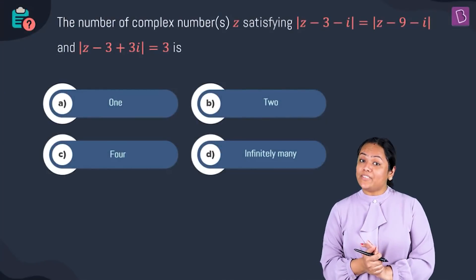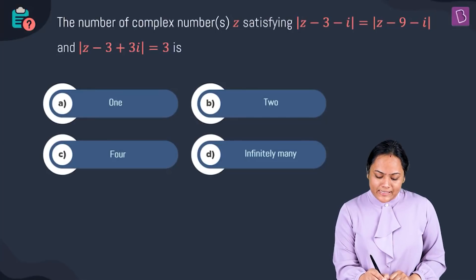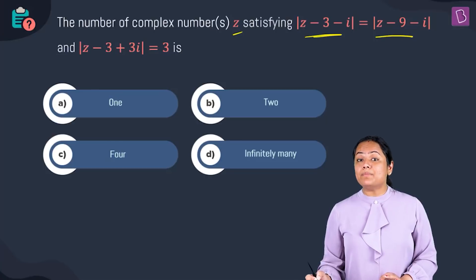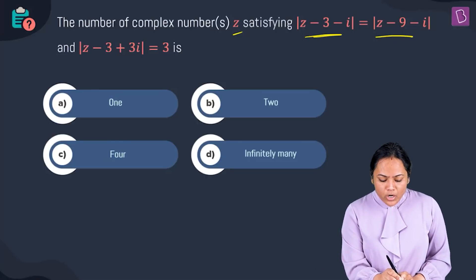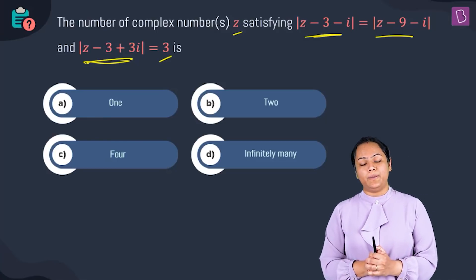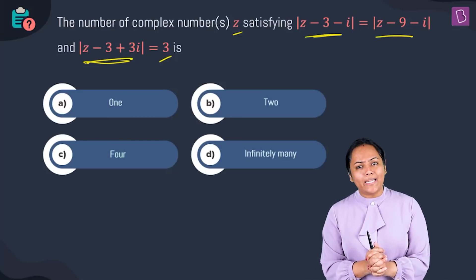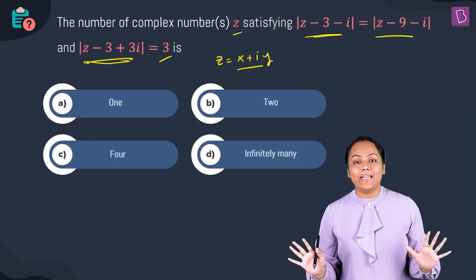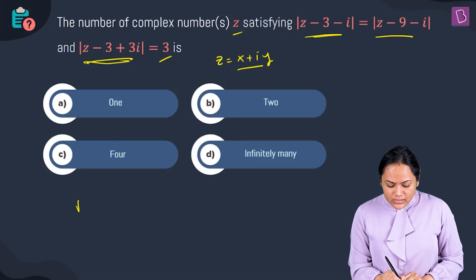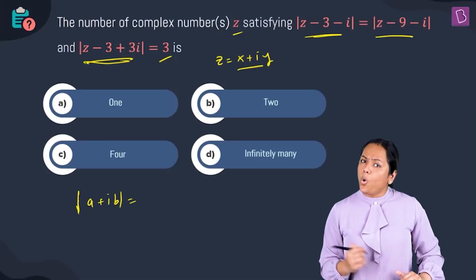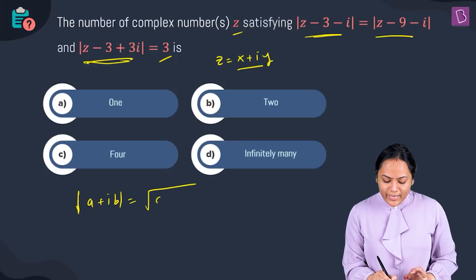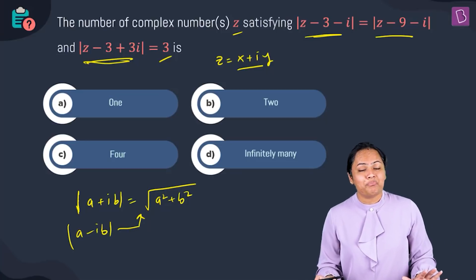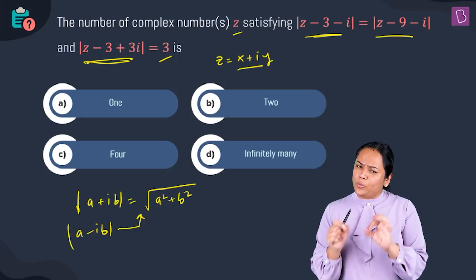Next question: find the number of complex numbers z satisfying two conditions — |z - 3 - i| = |z - 9 - i|, and |z - 3 + 3i| = 3. The approach is to substitute z = x + iy in both relations and solve for x and y. Recall that |a + ib| = root of (a² + b²).